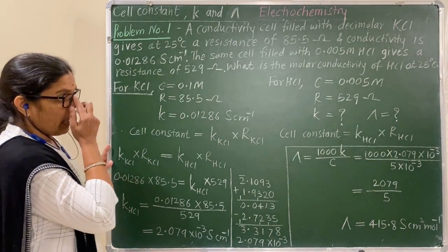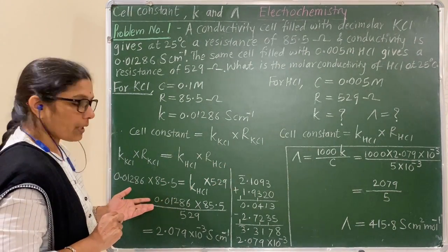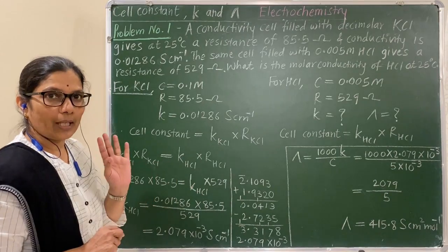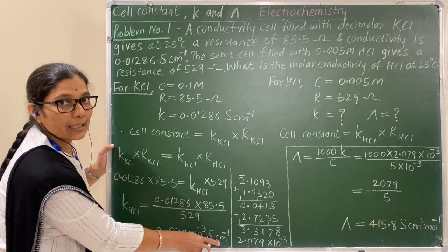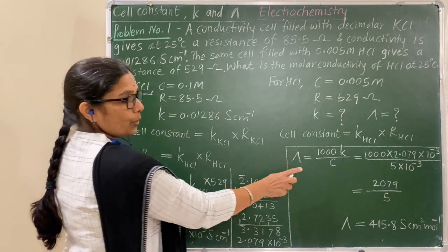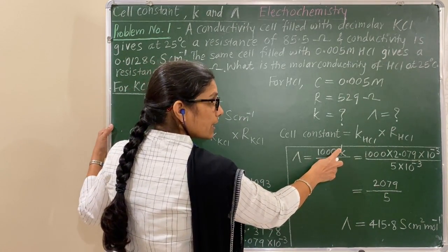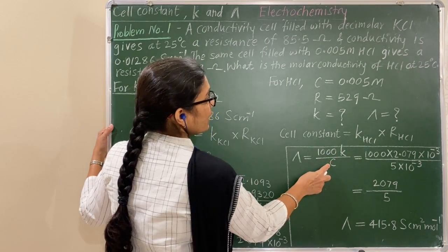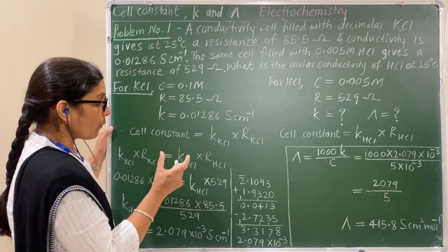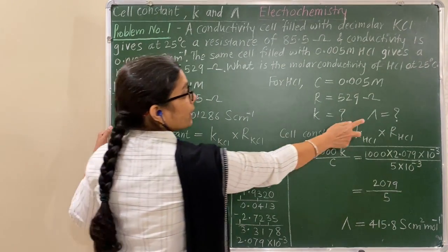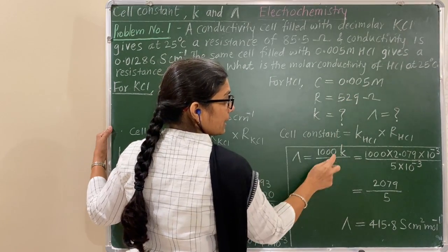Now, for molar conductivity — once you know the conductivity, you can determine the molar conductivity. Check the unit of conductivity: it is Siemens per centimeter. Use the molar conductivity formula with the concentration of SCL, since we want to determine the molar conductivity of SCL. Its concentration is 0.005 molar.